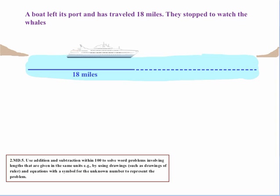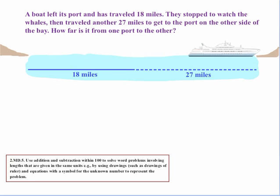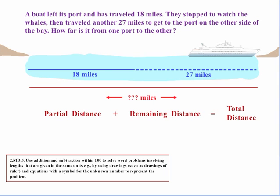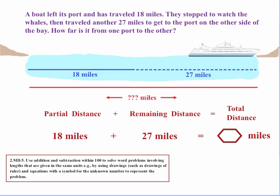Let's take a similar scenario. A boat left its port and traveled 18 miles, then stopped to watch whales. After the whales went away, they continued and traveled another 27 miles to reach the port on the other side. How far is it from one port to the other? Students draw a visual showing 18 miles then 27 miles, with the unknown being the total. The logic statement is: partial distance plus remaining distance equals total distance. Numerically: 18 miles plus 27 miles equals an unknown number of miles. Students then do the addition and fill in the solution.